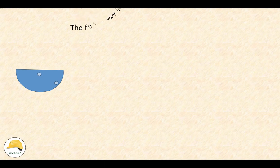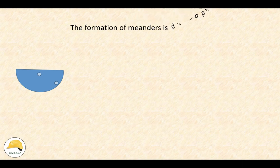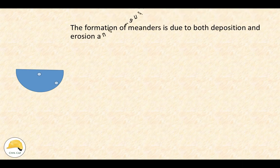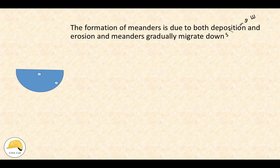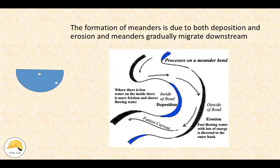In the case of river flow, it involves deposition and erosion. This is the meanders. It is the same process of erosion and sedimentation. The stream, river, and bend are what meanders are.